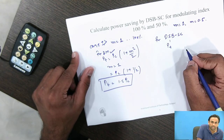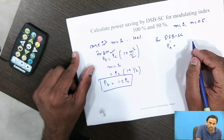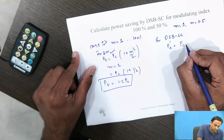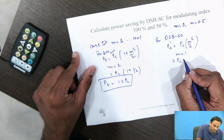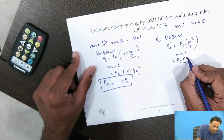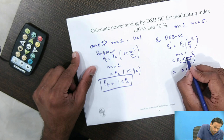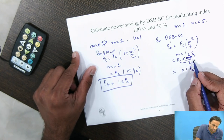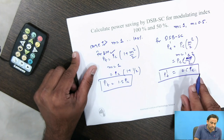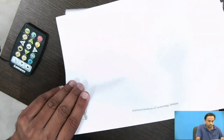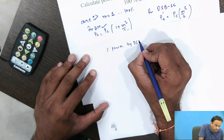For DSB-SC, we suppress the carrier and only send LSB and USB. The total power is Pt' = Pc·m²/2. Substituting m = 1 gives Pt' = 0.5 Pc.